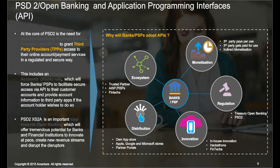At the core of PSD2, there are two categories of payment transactions. One is AISP — Account Information Service Provider — which is all about aggregation of financial accounts across multiple banks and financial organizations. The other is PISP — Payment Initiation Service Provider — which is about providing third-party access to initiate payment transactions from one bank account to another, bypassing existing payment processes like credit card networks or Visa or Mastercard networks.